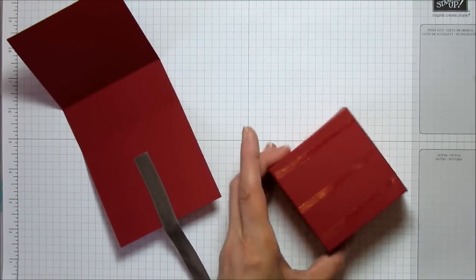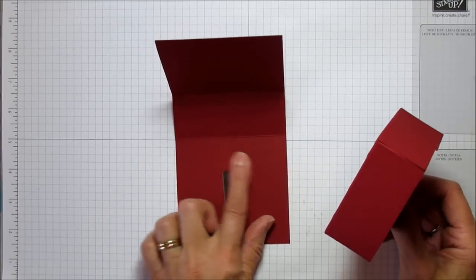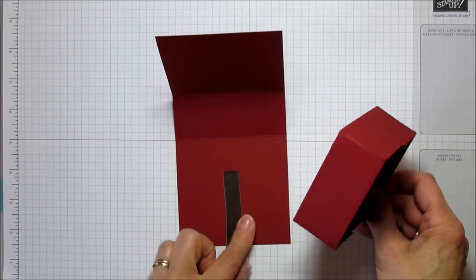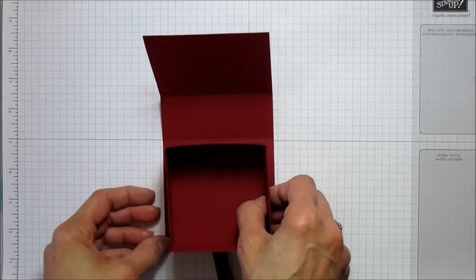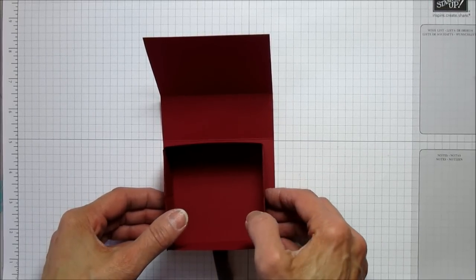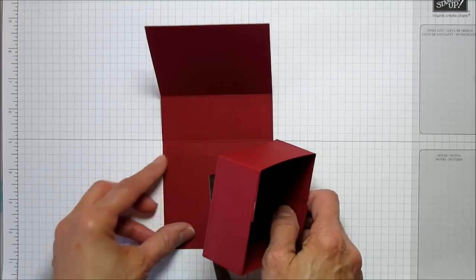Now we can attach it to the bottom of the box. You want to make sure it's centered in the middle of this square, so you may have to look over it and make sure it is centered. You don't want to go over this line or your box won't close.